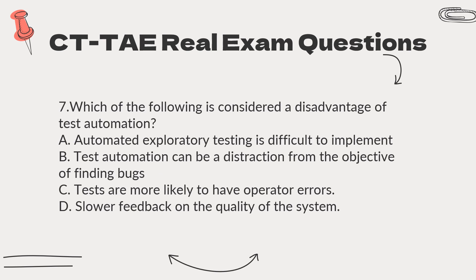Question 7. Which of the following is considered a disadvantage of test automation? A. Automated exploratory testing is difficult to implement. B. Test automation can be a distraction from the objective of finding bugs. C. Tests are more likely to have operator errors. D. Slower feedback on the quality of the system. Answer: C.